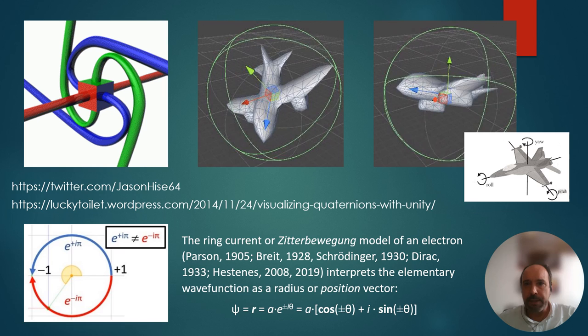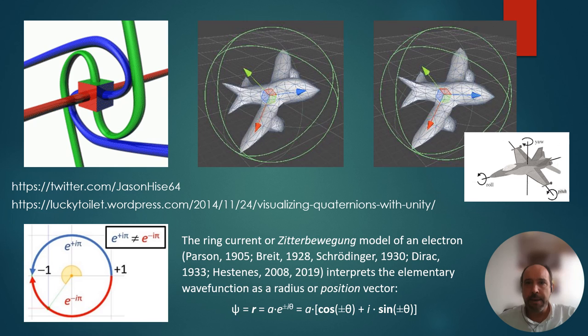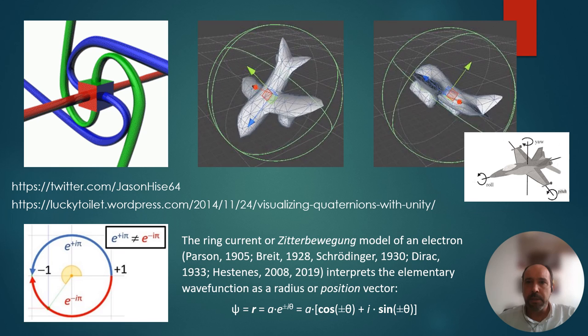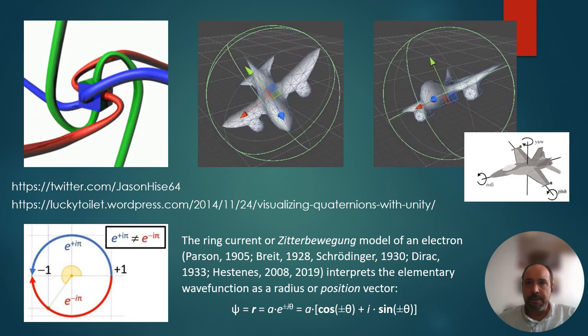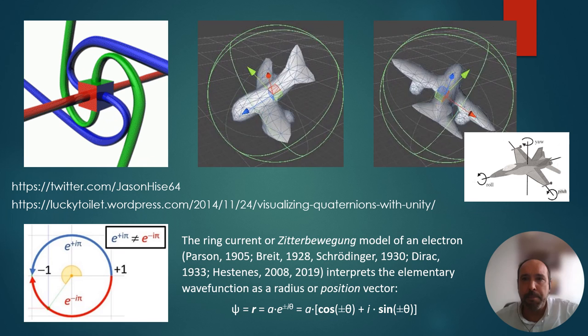In 3D space there are three possible axes of rotation. Applying that to a plane: a plane can rotate along its usual direction of motion, it can roll along the x-axis, it can pitch — going up and down — or it can yaw.